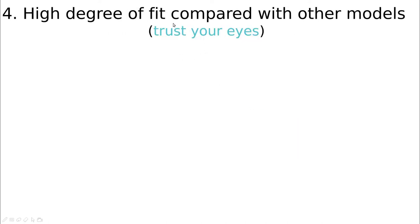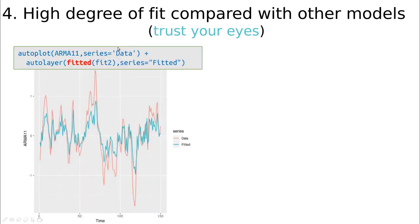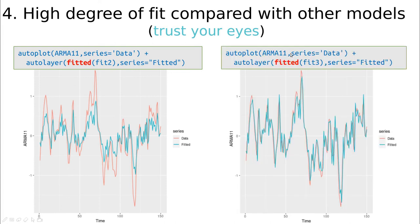Fourth — and this is one of the mottos of this course — always trust your eyes. Whenever you have a fit, compare the real and the fitted data. Fit number two, which was just a moving average process, shows that the fitting is not very good: the data is the reddish line and the fitted is the bluish line — you capture the trend somewhat but not properly. But if you use the proper ARMA(1,1) fit, you can see some discrepancies because there is noise, and you can't always capture all the properties, but overall things are working smoothly.